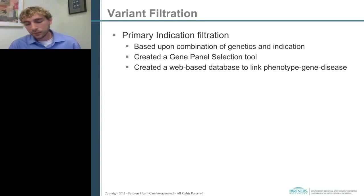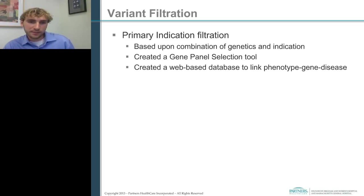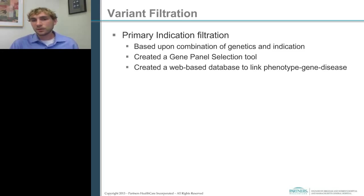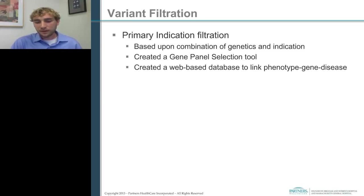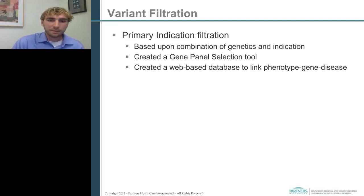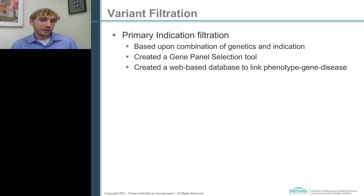For our variant filtration, the primary indication filtration is based on the combination of genetics — recessive, dominant, or de novo — and the actual phenotype, limiting to a certain set of genes. We've developed a gene panel selection method where we identify variants at a first tier highly likely relevant to the phenotype or disease, and a second tier of genes related in different pathways or with expression data suggesting relation to the potential phenotype. We've also created a web database link to help with this gene panel selection tool for known gene-disease-phenotype relationships, enabling a first pass on genes potentially relevant for a particular phenotype.